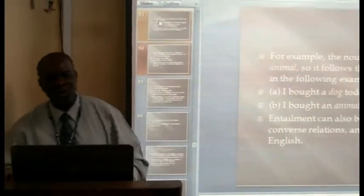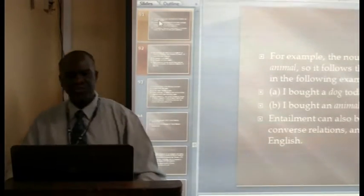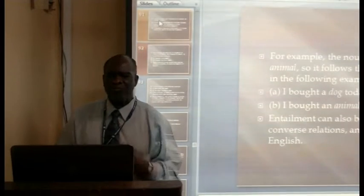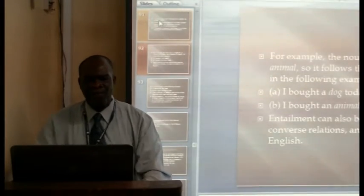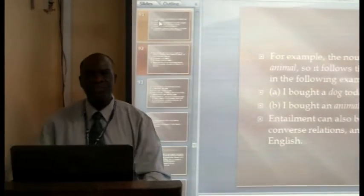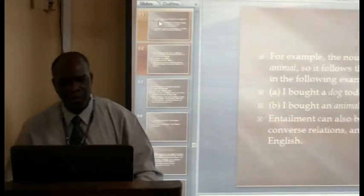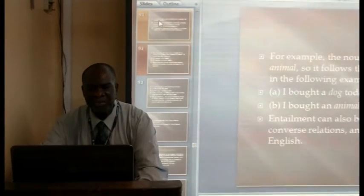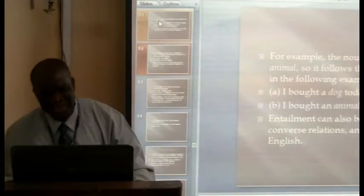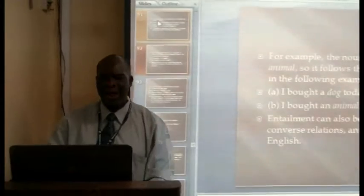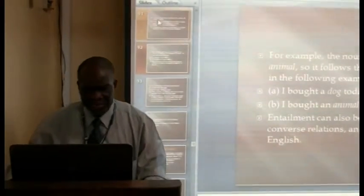In a certain sense, the meaning of kill contains the meaning of die. We call this type of meaning relationship synonymy. Furthermore, hyponymy between lexical items is a regular source of entailment between sentences. For example, the noun dog is a hyponym or type of animal. So in the following pair: sentence A, 'I bought a dog', entails sentence B, 'I bought an animal'. Dog is a hyponym of animal, and that means sentence A entails sentence B.